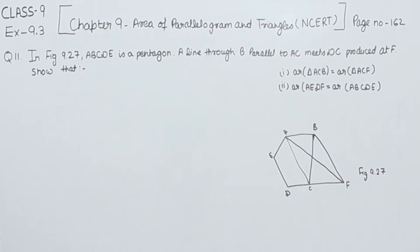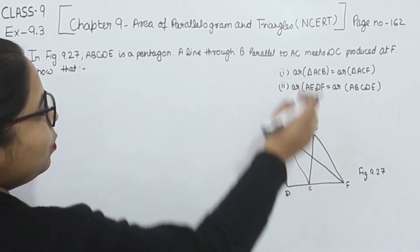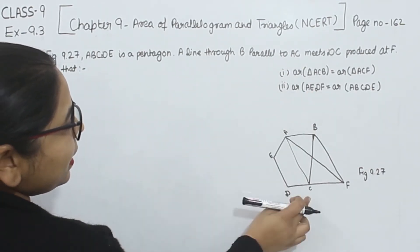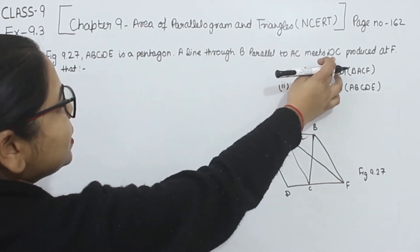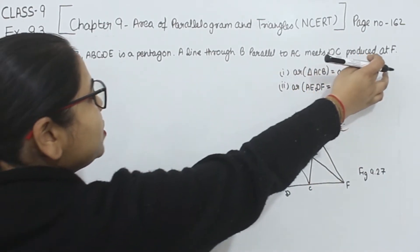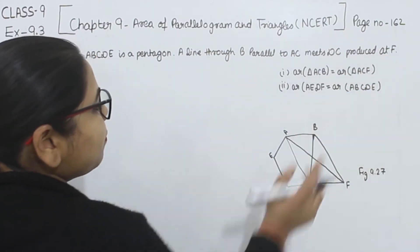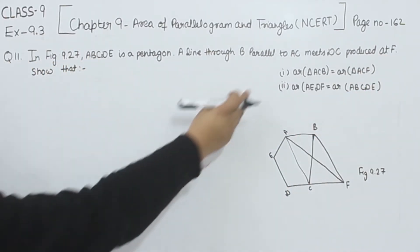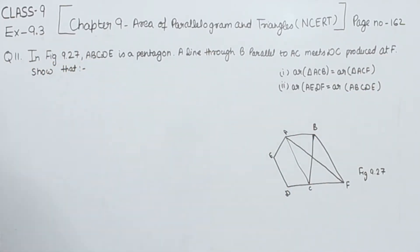In figure 9.27, ABCDE is our pentagon. A line through B parallel to AC meets DC produced at F. Now we have to prove these two things.